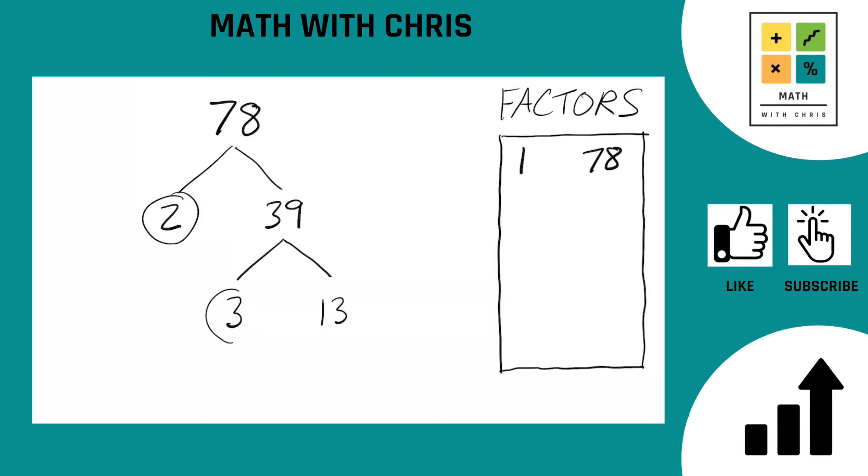3 we know is a prime number. What about lucky 13? That's also a prime number so we are already done with our factor tree as every path you take ends in a circled prime number.